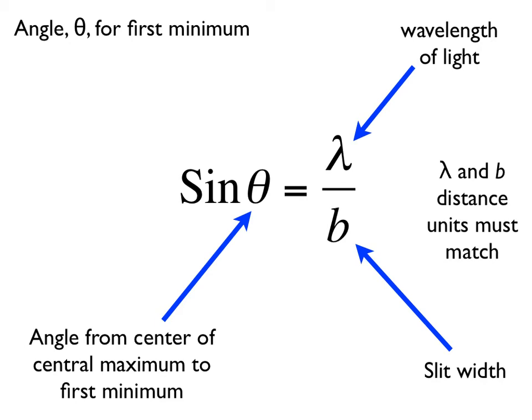In solving single slit diffraction problems, it's often useful to know the measure of the angle theta. This equation shows the relationship between the wavelength lambda, the slit width lowercase b, and the angle theta. A reminder from the previous slide that theta is the angle from the center line, or the center of the central maximum, to the first minimum, also sometimes called the dark fringe.